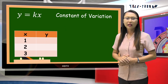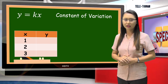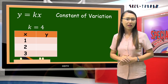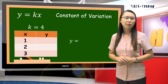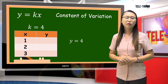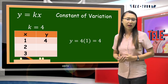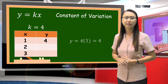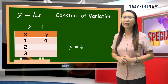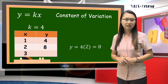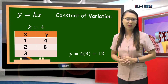Let us have this table. Let us solve for the value of y given the following values of x by using y is equal to kx. Let us use 4 as the value of k. If the value of x is 1, y is equal to 4 multiplied by 1, the answer is 4. If the value of x is 2, we have y is equal to 4 multiplied by 2, so the answer is 8. And if the value of x is 3, we have y is equal to 4 times 3, the answer is 12.